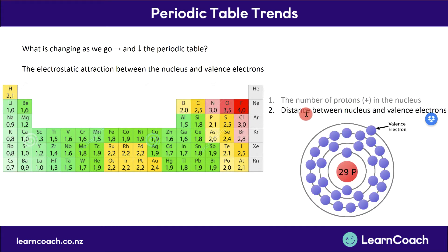The other reason is the distance between the nucleus and the valence electrons. With electricity, the further a positive and negative charge are away from each other, the weaker the attraction or repulsion force is. When you go down the table, the electrons are located further away, and because they're further away, the attraction force is much, much weaker. This counteracts the protons pulling the electrons in.